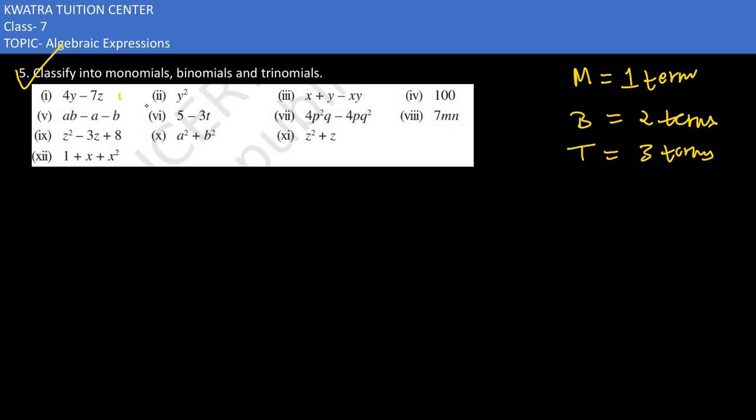In the first situation, there are two terms, so it's a binomial. In the second part, it would be a monomial. Then in the third one, three terms are there, so it would be a trinomial. In the fourth problem, it's just 100. A single term is there, so it's a monomial.